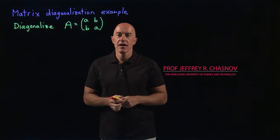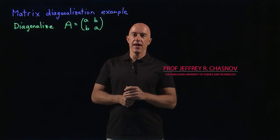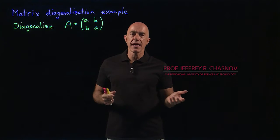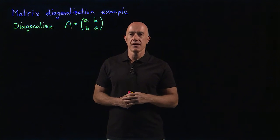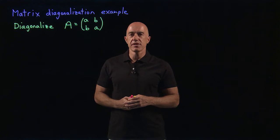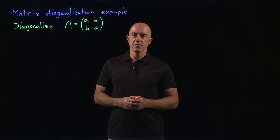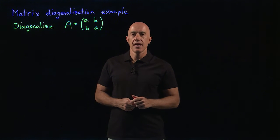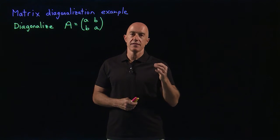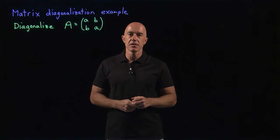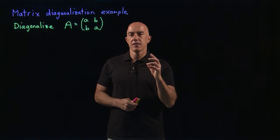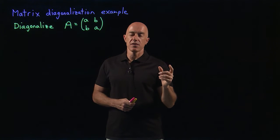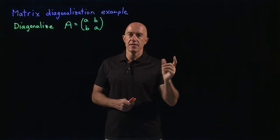In the last video, I told you the theory of how to diagonalize a matrix. If it's an n by n matrix, it should have n linearly independent eigenvectors. We can put those eigenvectors as columns in a matrix called S, and the eigenvalues we can put in a diagonal matrix called capital lambda. Then we can write lambda as a product of the S matrices and the A matrix.